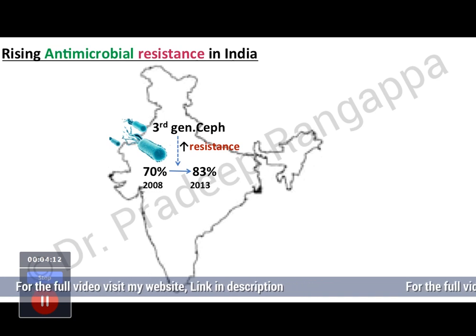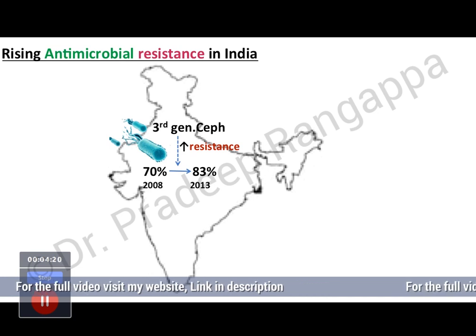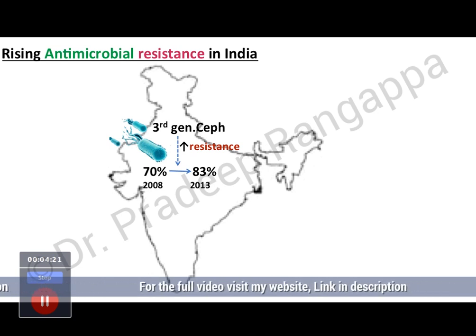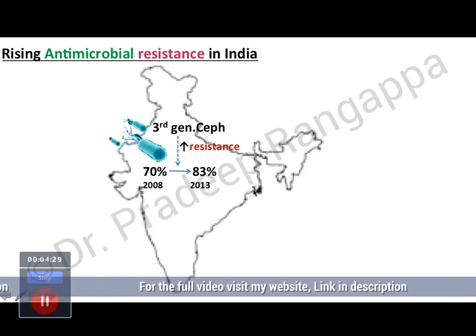I will be talking about a lot of these enzymes, and it gives you clarity as to how the whole resistance pattern works. When you look at antimicrobial resistance in India, the coliform resistance is increasing from 70% to 83% in 2013.